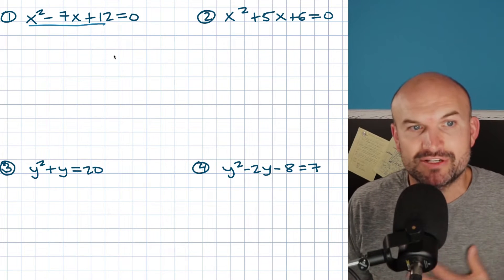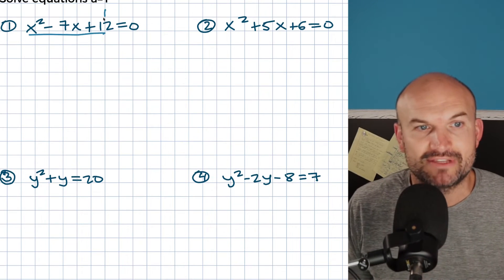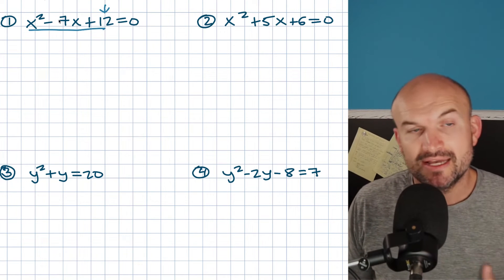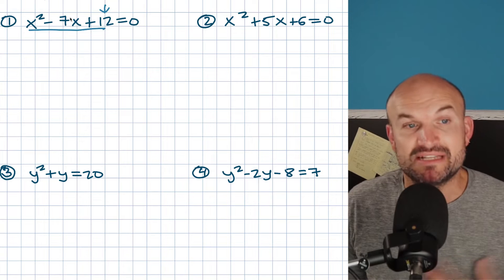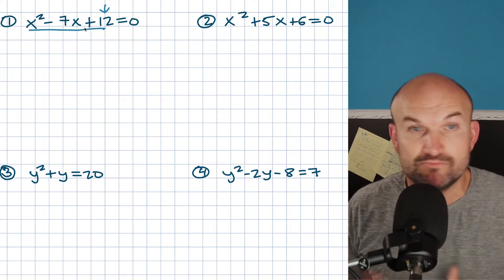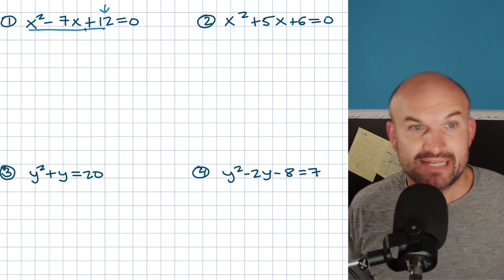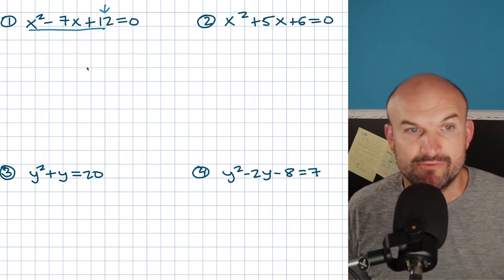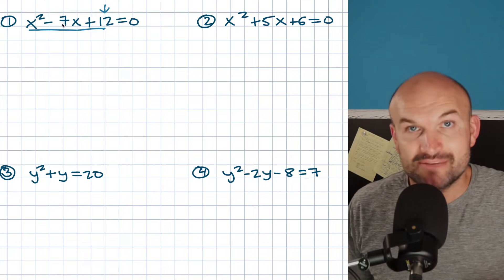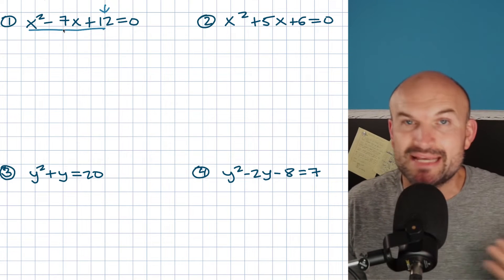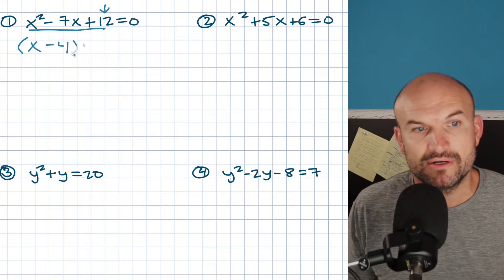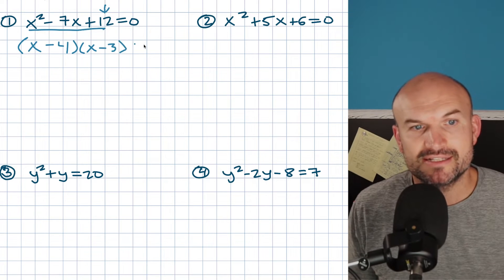When you're trying to factor, always look at the last term. If the last term is positive, you're looking for the sum of the factors to give you the middle term. If your middle term is negative, both factors have to be negative. So I'm asking myself: what two numbers multiply to give me 12 and add to give me negative seven? Thinking of the factors of 12 — 12 and 1, 6 and 2, 3 and 4 — oh, 3 and 4 give me seven. Since it's negative, it's negative 3 and negative 4. So I can write this in factored form as (x minus 4)(x minus 3) equals zero.